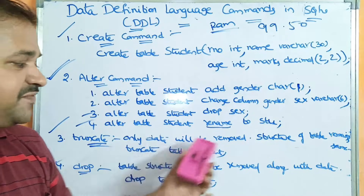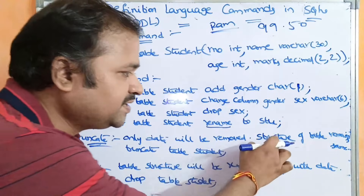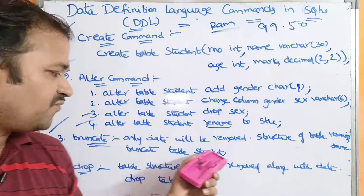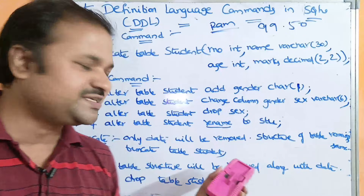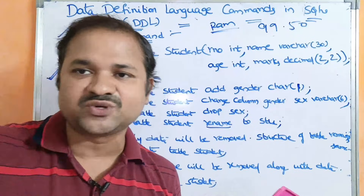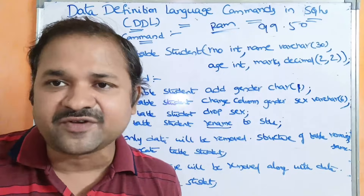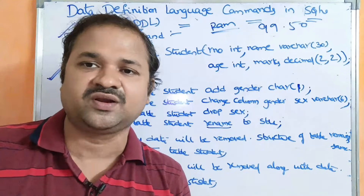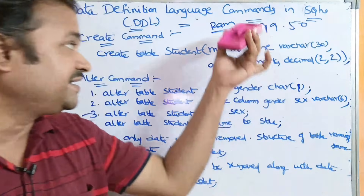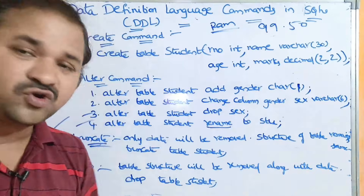Now let us see about the TRUNCATE command. If we use the TRUNCATE command, then only the data will be removed — the structure of the table remains the same. For example, TRUNCATE TABLE student: if the student table contains 6 rows, then all 6 rows will be deleted from the table. All the data will be deleted, but the table structure — with columns like roll number, name, age, and marks — will remain as it is.